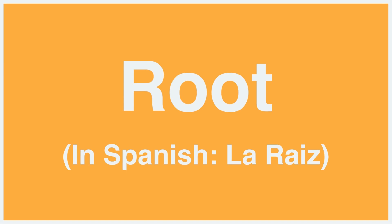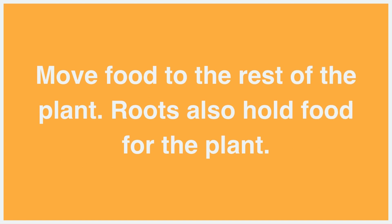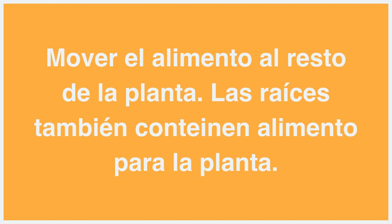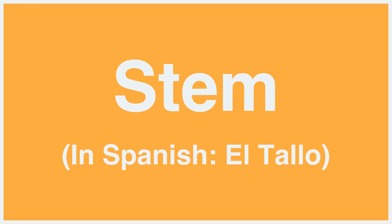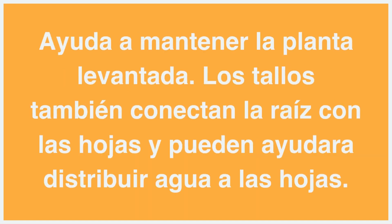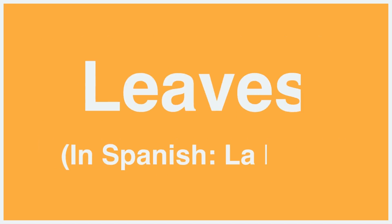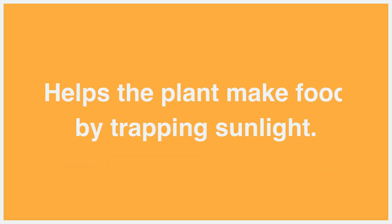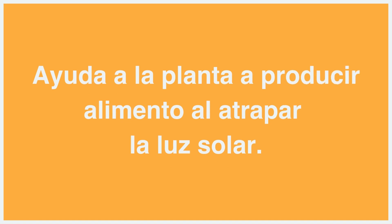Also, be sure to introduce the following words. Root, or in Spanish, la raíz — roots move food to the rest of the plant; roots also hold food for the plant. Or in Spanish: mover el alimento al resto de la planta; las raíces también contienen alimento para la planta. Stems, or in Spanish, el tallo — stems help to keep the plant standing up straight; stems also connect the root to the leaves and can help provide water to the leaves. Or in Spanish: ayuda a mantener la planta lamentada; los tallos también conectan la raíz con las hojas y pueden ayudar a distribuir agua a las hojas. And leaves, or in Spanish, la hoja — leaves help the plant make food by trapping sunlight. Or in Spanish: ayuda a la planta a producir alimento al atrapar la luz solar.